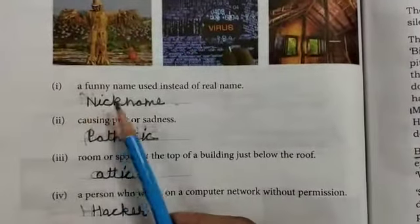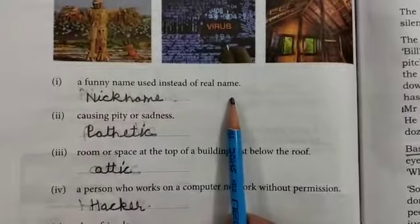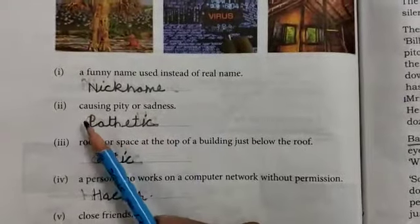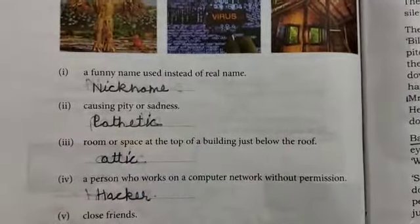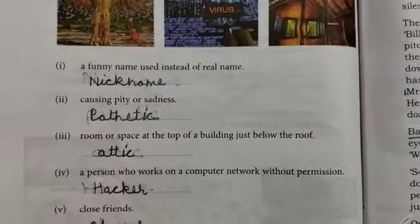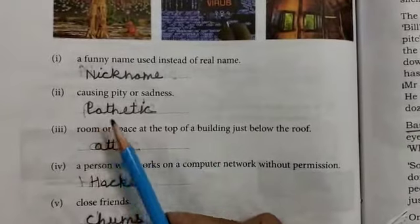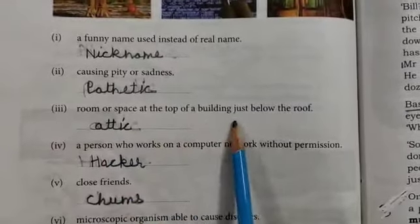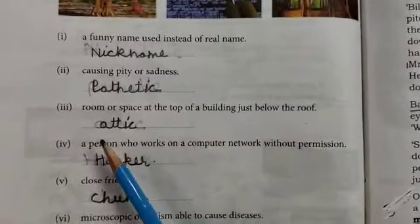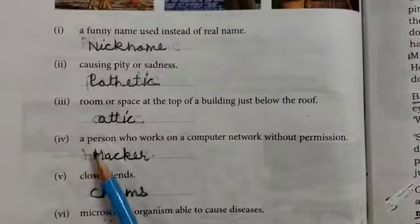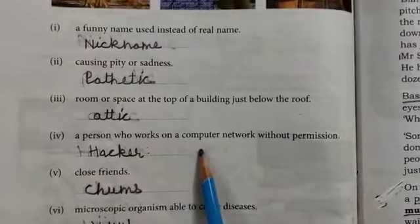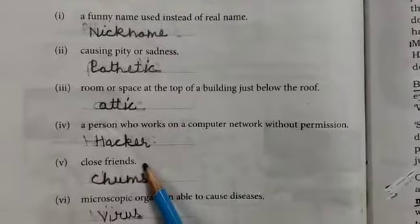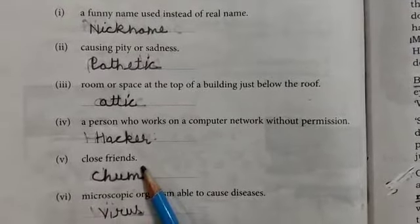First: a funny name used instead of a real name — the answer is 'nickname.' Next: causing pity or sadness — the answer is 'pathetic.' Next: room or space at the top of a building just below the roof — the answer is 'attic.' Next: a person who works on a computer network without permission — the answer is 'hacker.'